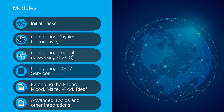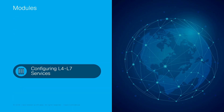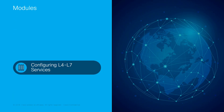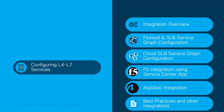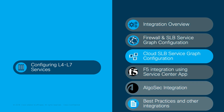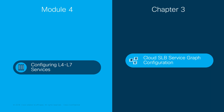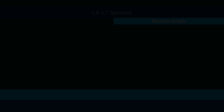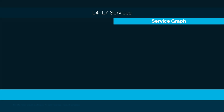Welcome to ACI, the Network Made Simple learning series. In this video, we will cover Module 4, Configuring L4-L7 Services, Chapter 3: Cloud SLV Service Graph Configuration.